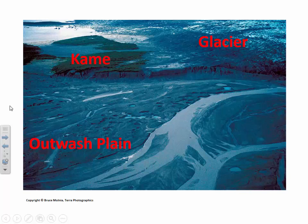Around the edges of the glacier there would have been mounds and terraces of sediment known as kames. The Edinburgh Cemetery, the area around the Edinburgh Mall, and the spit or peninsula of sediment that sticks out into Edinburgh Lake known as Green Point would all be examples of kame deposits of this type.